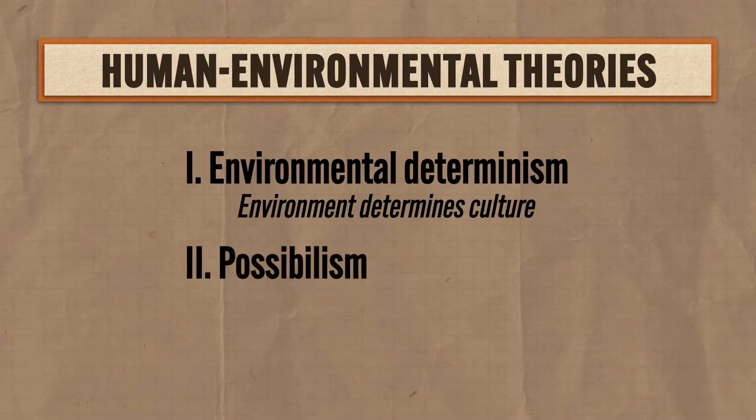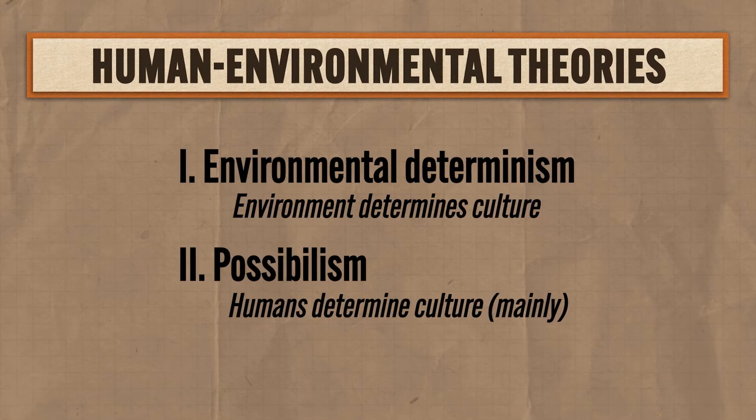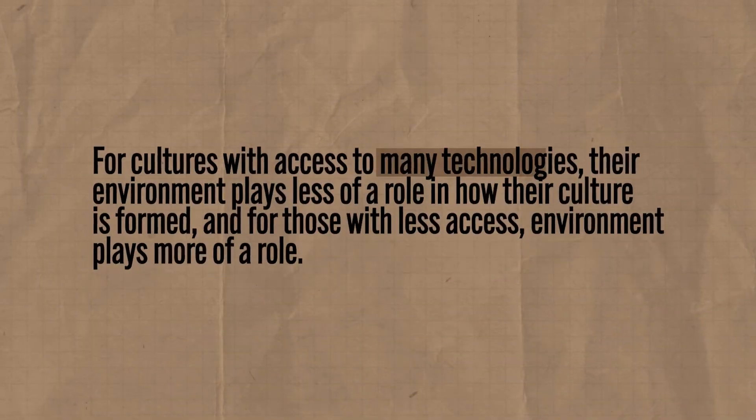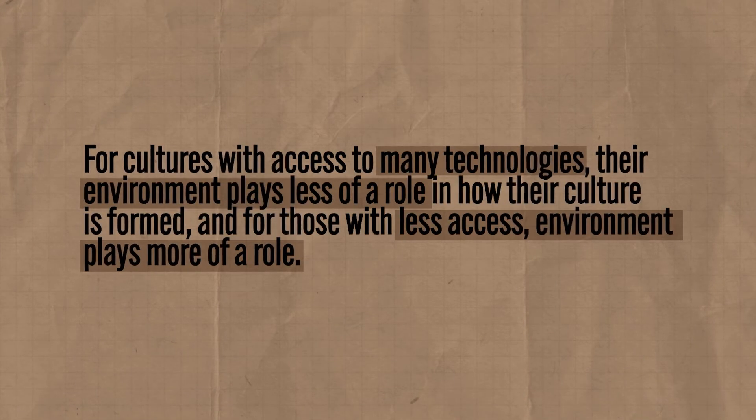Determinism is no longer the prevailing theory. Today, possibilism is the dominant theory of human-environmental interaction, and it argues the reverse — namely that humans, not geography, are the main determiner of their culture. Possibilism says that whatever environment humans find themselves in, it offers many different possibilities for cultural development. To be clear, possibilism isn't arguing that environment has no effect on cultural development — it's only arguing that environment isn't the main determiner. However, a people's possibilities for shaping their environment are related to their access to various technologies. For cultures with access to many technologies, environment plays less of a role; for those with less access, environment plays much more of a role.